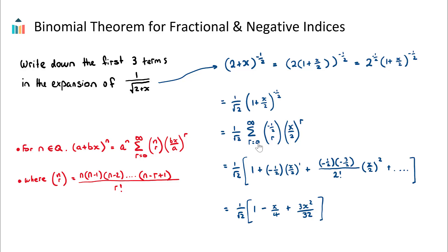Let's find our first three terms by substituting in r. When r equals zero: negative a half C zero is just one, and x over two to the power of zero is also one, so the first term is one. When r equals one: negative a half C one, using the binomial coefficient formula with r equal to one, gives negative a half over one factorial, which is just negative a half. Then we have x over two to the power of one, giving us negative a half times x over two.